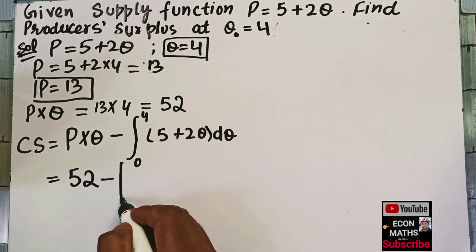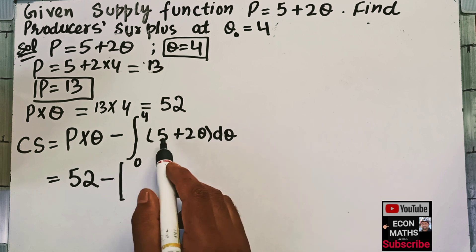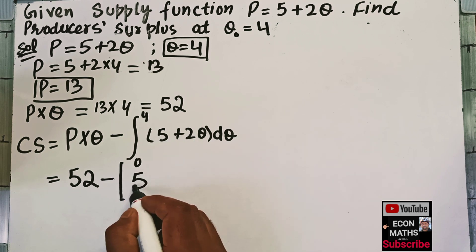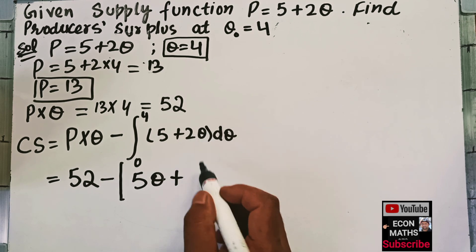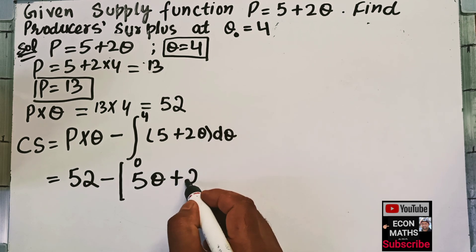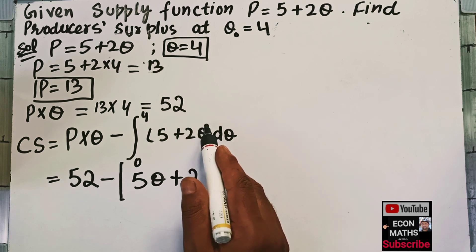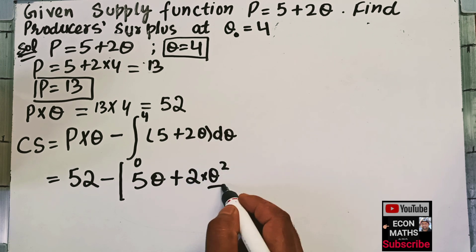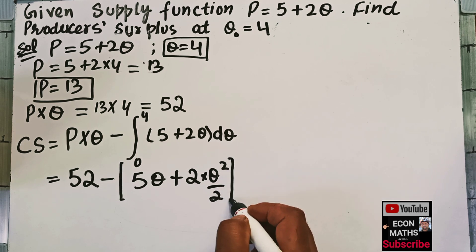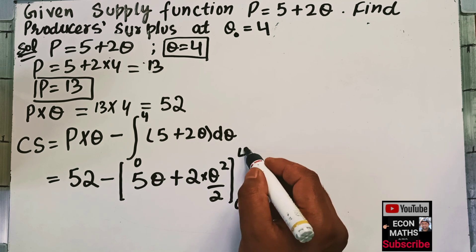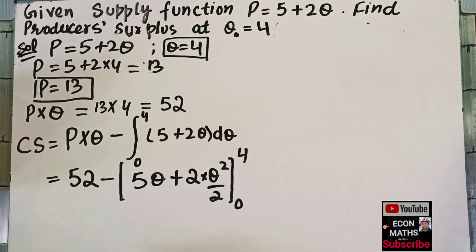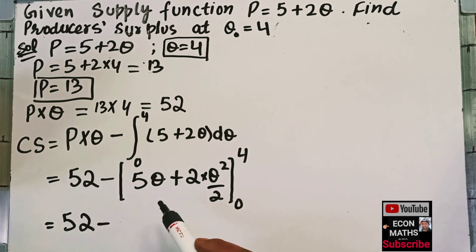The integration of 5 + 2Q with respect to Q gives 5Q + Q²/2, evaluated from the limit 0 to 4. So we have: producer surplus = 52 minus [5Q + Q²/2] evaluated from 0 to 4.